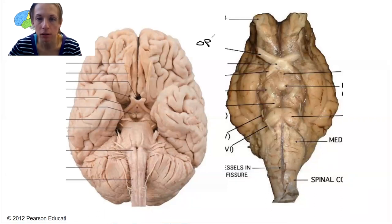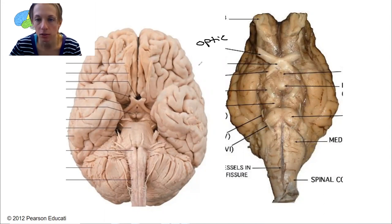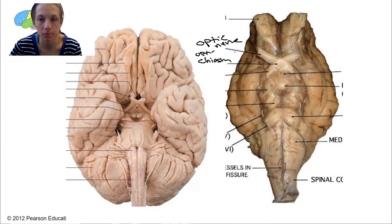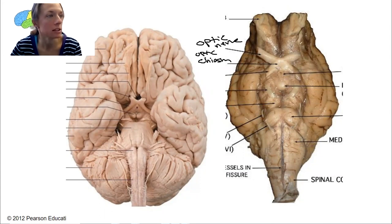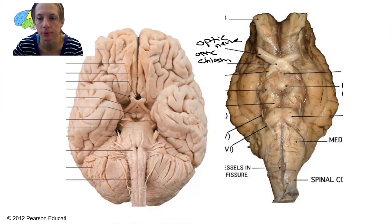Optic. This is the optic nerve right here. What is this right here below it? The optic chiasm. Here's optic nerve. Here's optic chiasm. It becomes optic tract, but optic tract isn't on your list for the ventral side.